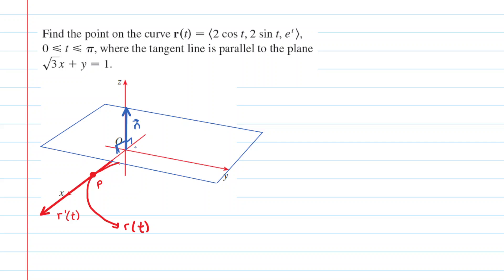Let's review the normal vector. The normal vector is pointing upward along the z-axis; it is perpendicular to the plane. From the perspective of this drawing, we can see that the only way the tangent vector will be parallel to the plane is if it is perpendicular to the normal vector. So the key is that r'(t) must be perpendicular, or orthogonal, to that normal vector.